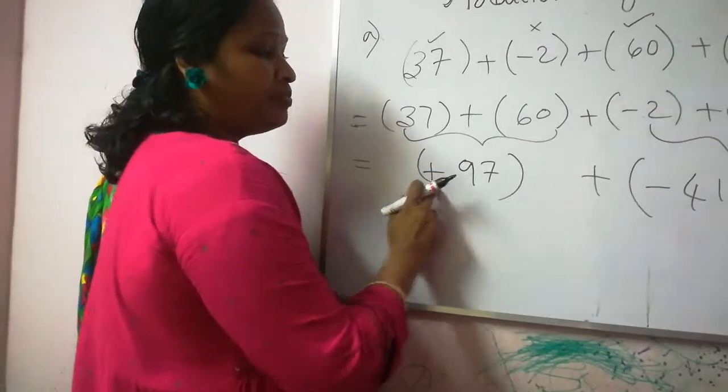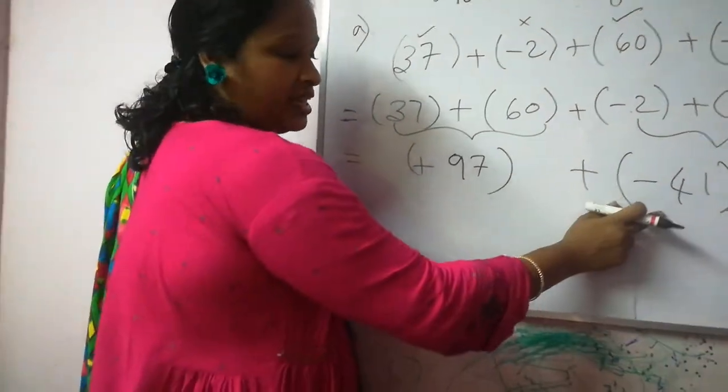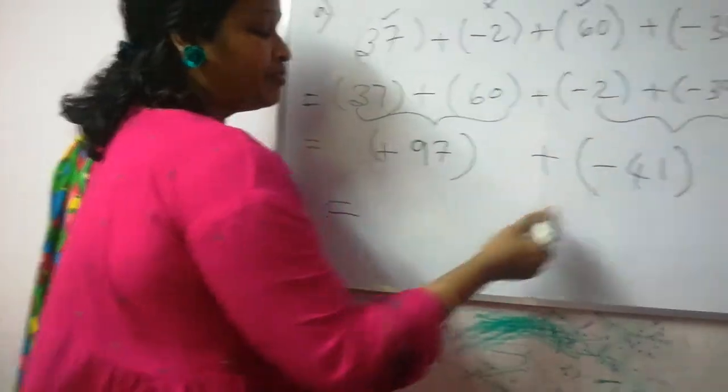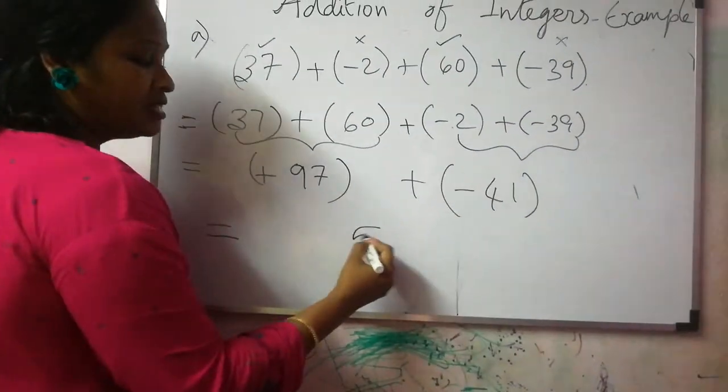Now see here. One plus and one minus. Different sign. Different sign means you have to subtract. 97 minus 41 is 56.